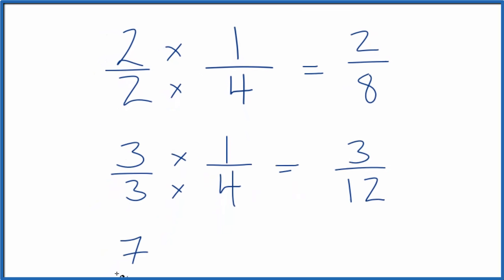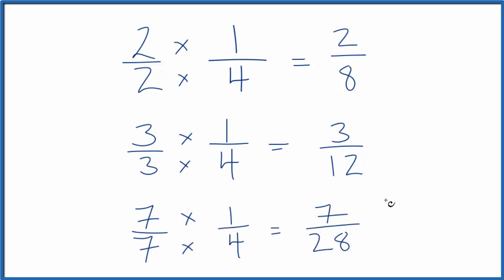One last one. Seven over seven. Let's do that. So again, seven over seven, that's just one. We haven't changed the quantity. This is still equal to zero point two five, as are all of these equivalent fractions for one-fourth.